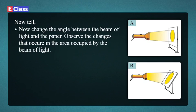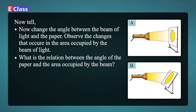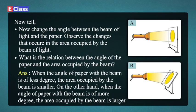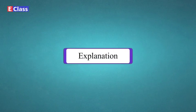Now change the angle between the beam of light and the paper. Observe the changes that occur in the area occupied by the beam of light. What is the relation between the angle of the paper and the area occupied by the beam? Answer: When the angle of the paper with the beam is of fewer degrees, the area occupied by the beam is smaller. When the angle is of more degrees, the area occupied by the beam is larger.